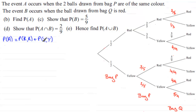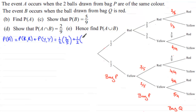The probability of getting two reds will be one half times two fifths, so we've got a half multiplied by two fifths. Then to this we add the probability of getting two yellows, which is also a half multiplied by two fifths. If you work that out you end up with two fifths — so the probability of event A is two fifths.